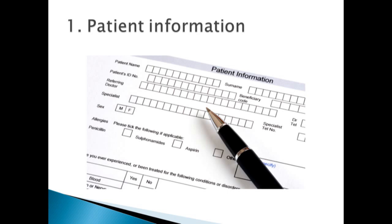The age and sex of the patient is a more important factor in deciding the dose of medication, specially for pediatric and geriatric patients. The address of patient is for record purposes so that the patient can be contacted at later stages if required. In some cases, body weight is also written in the prescription, which is done to calculate the appropriate dose in special cases.